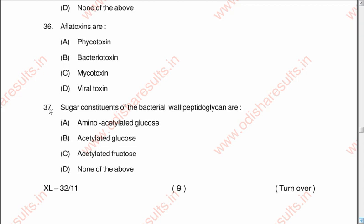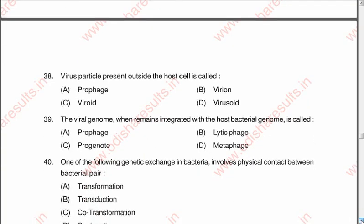Question 37: Sugar constituents of the bacterial cell wall peptidoglycan are A amino-acetylated glucose, B acetylated glucose, C acetylated fructose, D none of the above. The correct option is B, acetylated glucose. Question 38: Virus particle present outside the host cell is called A prophage, B virion, C viroid, D virusoid. The correct option is B, virion.